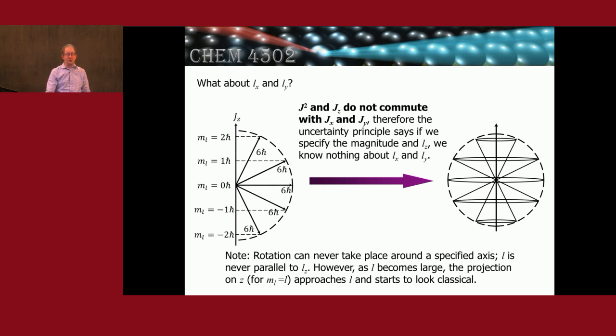In the limit that L is large, in the limit that we have a large amount of rotational kinetic energy, and the projection of L onto z when m sub L equals L starts to look like L, the result starts to look more classical. You can have all of your angular momentum pointed in one direction.